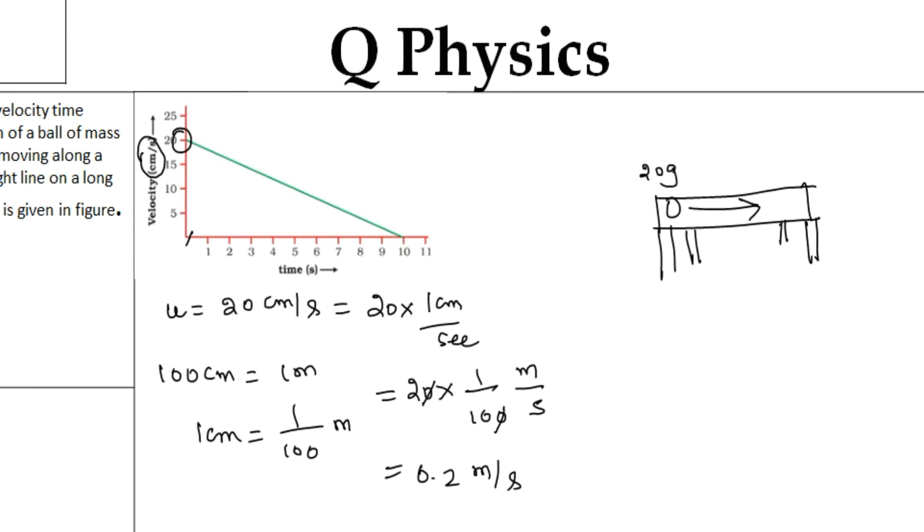Now I calculated the initial velocity in terms of meters per second as 0.2. So this 20 gram ball is moving with the velocity 0.2 meters per second.